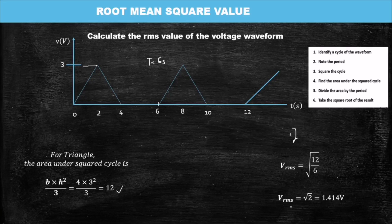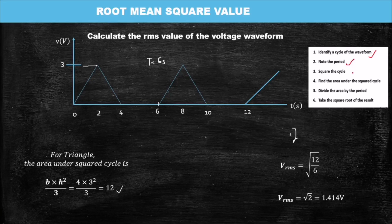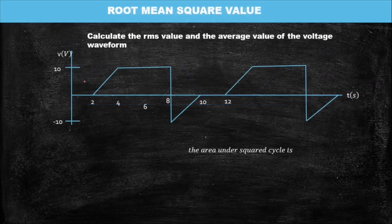So the root mean square voltage of this wave is 1.414 volts. To summarize: first identify the cycle, note the period, square the cycle, divide by the period, and square root the result. At the end your answer will be in volts, or sometimes in current, depending on the source given. Now let's take the next question.